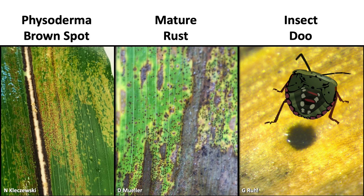Phisoderma brown spot is a disease that actually infects your plants early in the season when plants are still in the whorl — around V5, V8, V10. You see the symptoms later in the season. Symptoms are typically banding on some leaves of the plants, and you'll often see this on the stalk as well. Only one or two leaves per plant are typically affected, and it's scattered throughout the field. Keep in mind that fungicide applications at VT do not work for Phisoderma brown spot, as infection occurred early in the season.